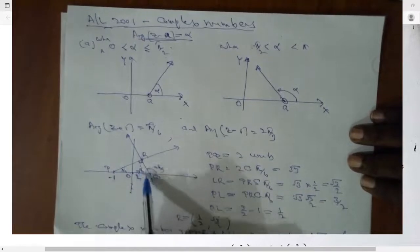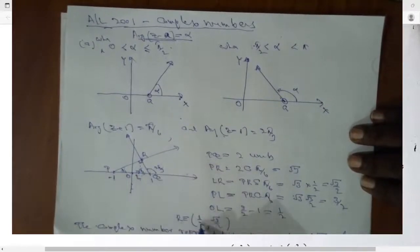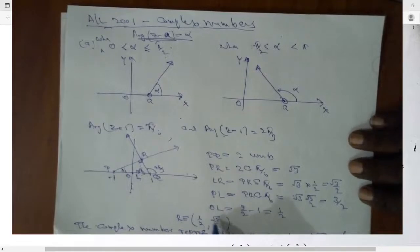Then coordinates of R, you know, R is in this side. So coordinates of R is half, comma, root 3 by 2.